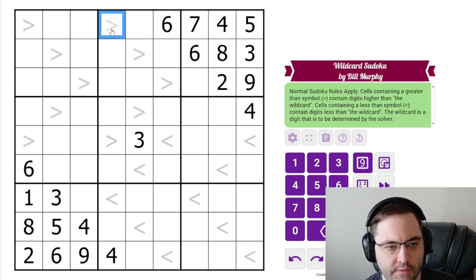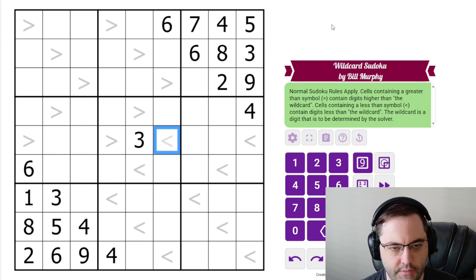and three by three box. Additionally, we have some greater than symbols and some less than symbols in the grid. A greater than symbol means the digit in this cell must be greater than the wildcard, and a less than symbol means the digit must be less than the wildcard. We don't know what the wildcard is to start the puzzle. We're going to have to figure that out, and those are the rules.